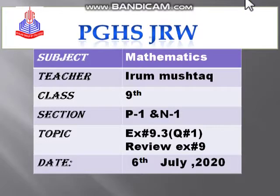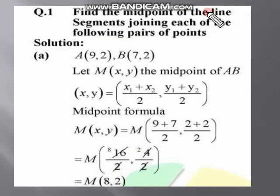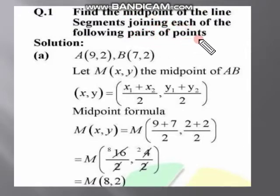Students, as you know chapter 9 is also important for short questions and multiple choice questions. Exercise 9.1 we have discussed, exercise 9.2 is long so we are going to discuss this chapter briefly. After 9.2, exercise 9.3 question number 1 — find the mid point of the line segment joining each of the following pairs of points.